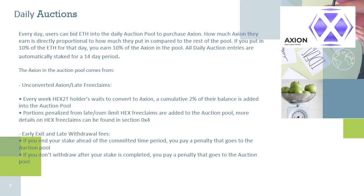The daily auction — putting tokens and value into your pocket. To get Axion, it needs to be claimed by HEX2T holders. The longer they wait to claim, the more penalties they face — about 2% of their total per week. This 2% is added into a daily auction pool where people can bid using ETH on the Axion tokens within it. If you bid 10% of the ETH on that day, you get 10% of the pool rewards. 80% of the ETH paid in the auction is then used to hyperdrive both the Axion token and the stakers' earnings.